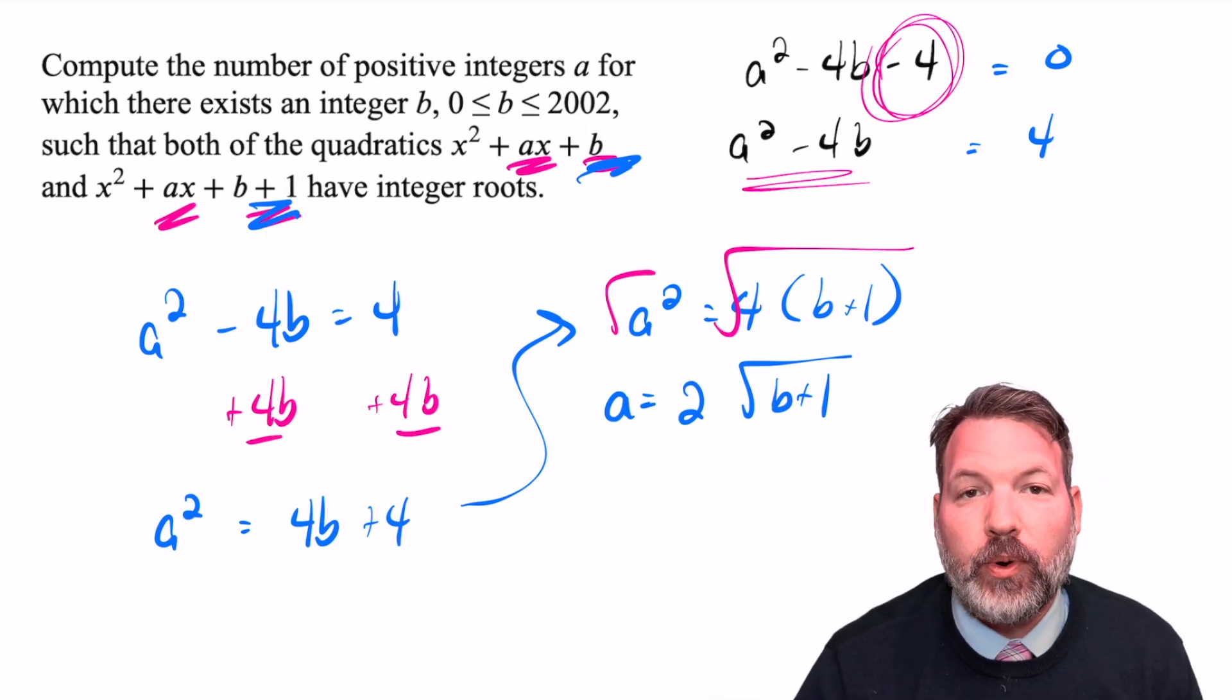So this work with the quadratic formula confirms for us not only did we find 44 possible examples of A and B pairs that satisfy what the question asked for, those must be the only such pairs. And therefore, we have fully answered this question.